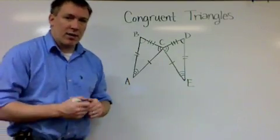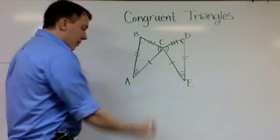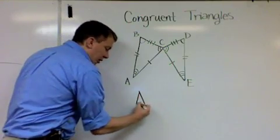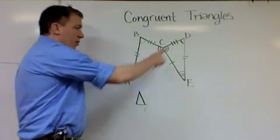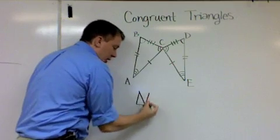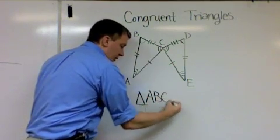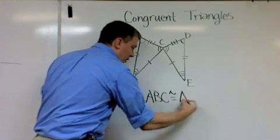Now, how I put that in writing is to use the triangle symbol, which just looks like a triangle, and then name one of the triangles. I'll name this one ABC is congruent to triangle—now it's very important that my order when I write this triangle corresponds to the order I wrote this triangle in.